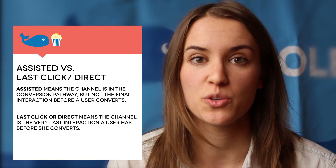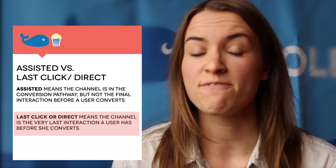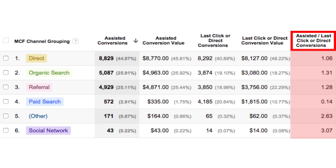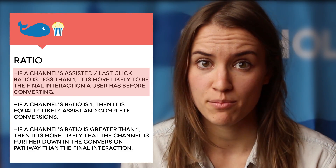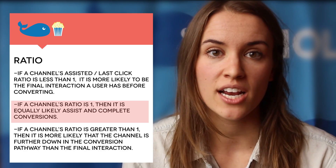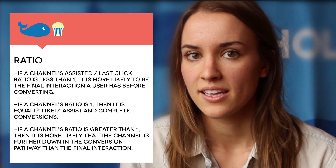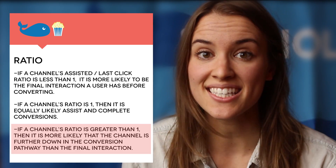Now let's dive into the Assisted Conversions chart in Google Analytics, but before we do this we need to understand the difference between assisted and last click or direct. Assisted means the channel is in the conversion pathway, but not the final interaction that a user has before they convert. Last click or direct means it is the very last channel that a user uses before they convert. Looking at the chart, the final column is a ratio — the number of assisted conversions over the number of last click or direct conversions. If a channel's assisted-to-last-click ratio is less than one, it's more likely to be the final interaction before conversion. If the ratio is exactly one, the channel is equally likely to assist and be last click. If the ratio is over one, the channel is more likely to be an assist in the conversion pathway.